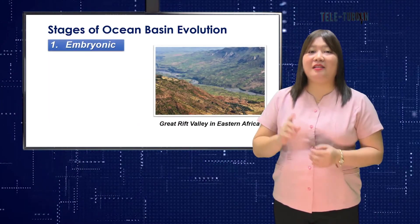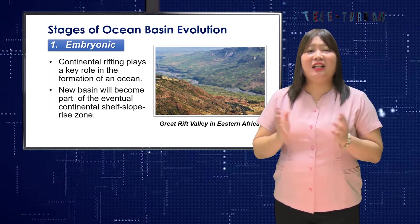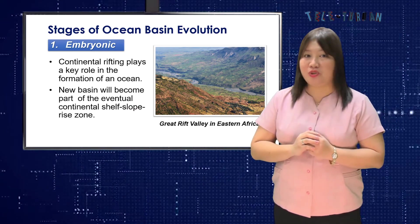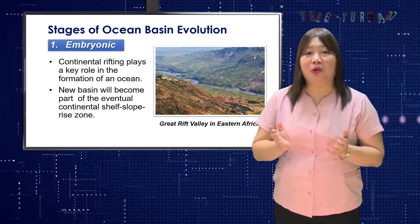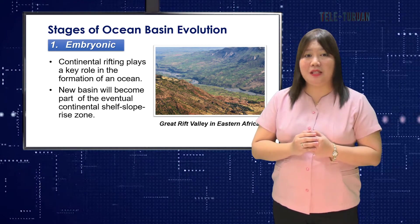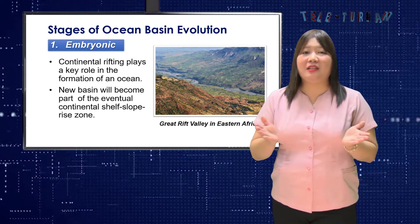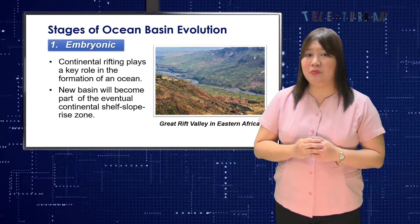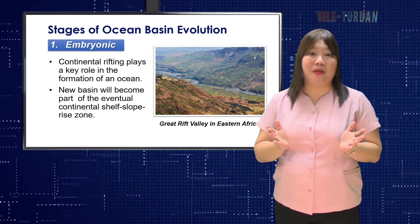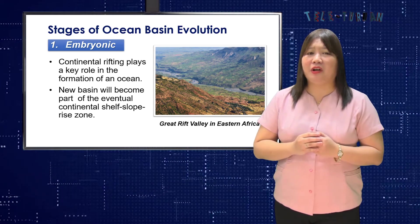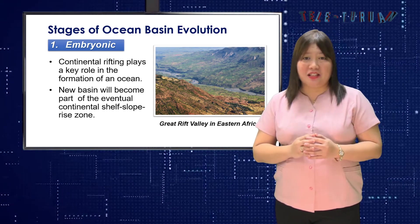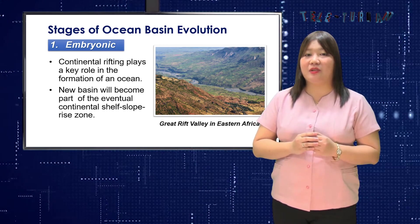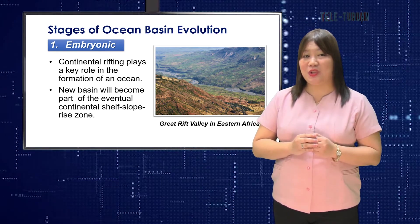Stage 1 is embryonic. Continental rifting plays a key role in the formation of an ocean. A rift valley forms as a continent begins to split. When separation occurs, sediments from the adjacent continents soon begin to build out into the new basin and will become part of the eventual continental shelf-slope-rise zone. An example is the Great Rift Valley in eastern Africa.